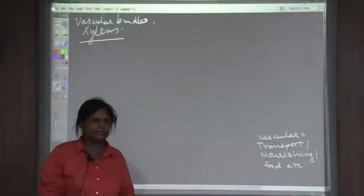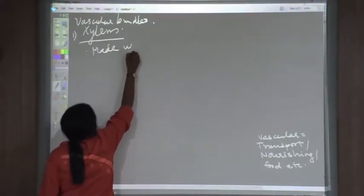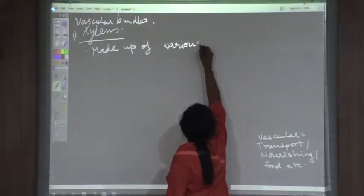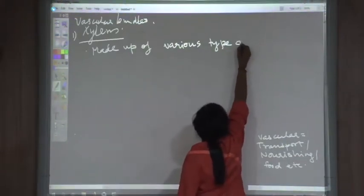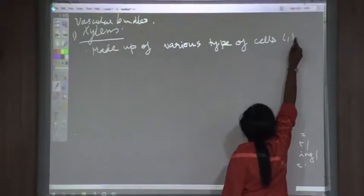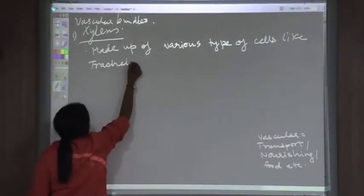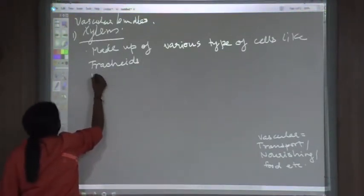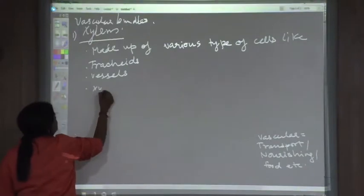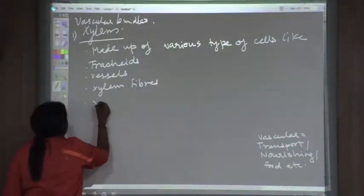Xylem will be supplying water to the plant parts. Xylem is further made up of various types of cells: tracheids, vessels, xylem parenchyma, and xylem fibers.